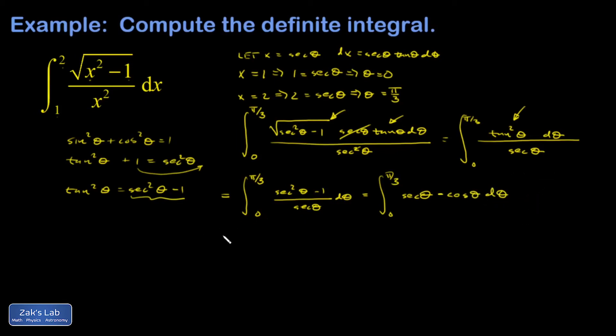So this looks really good. So I have out of the first term a natural log absolute value secant theta plus tangent theta minus integral of the second term sine theta. And this is all evaluated from zero to pi over three.